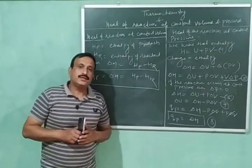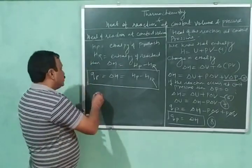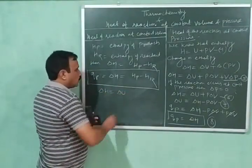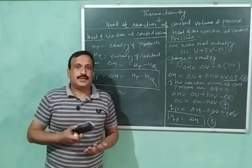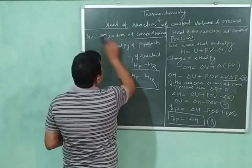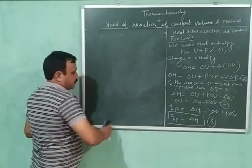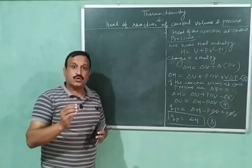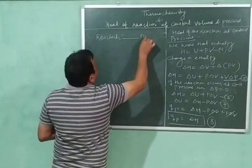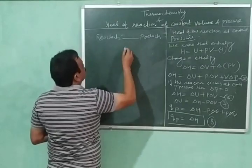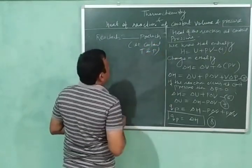Further, in many reactions involving solids, liquids, or solutions, ΔH = ΔU. Whereas reactions involving gases have ΔH different from ΔU. Let us explain this. Consider a reaction carried out at constant temperature and constant pressure, where reactants are converted into products.